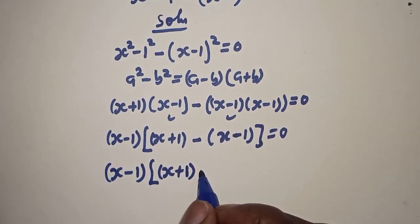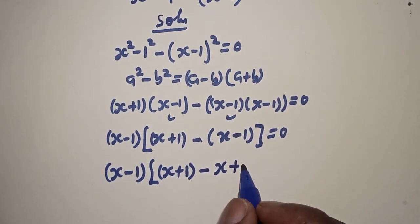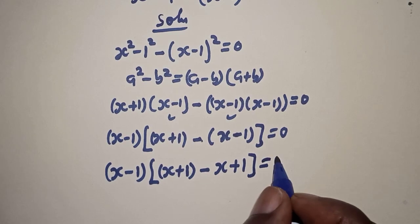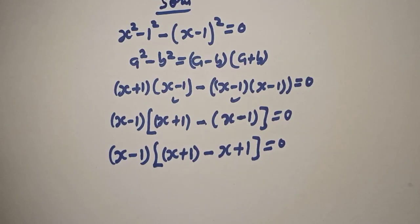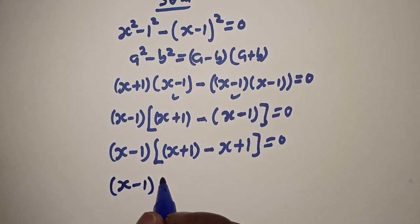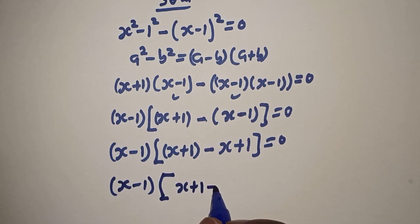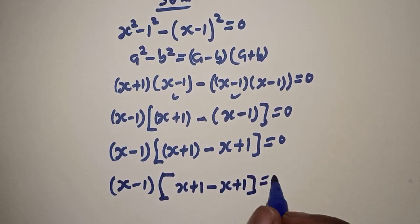Minus times s, minus s, minus times minus 1, plus 1, plus 1 is equal to 0. This is s minus 1 bracket s plus 1 minus s plus 1 is equal to 0.